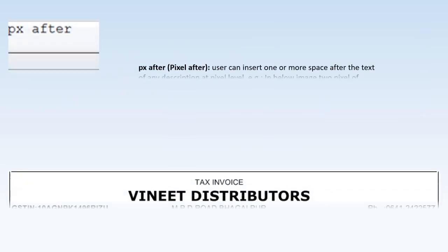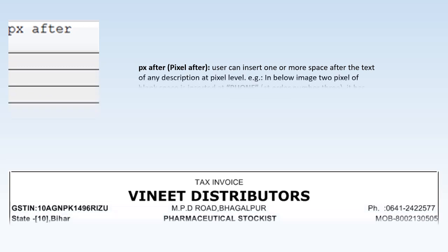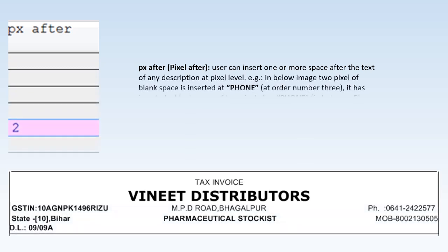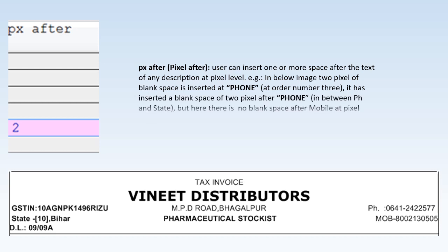Pixel Gap allows users to insert one or more spaces after the text of any description at the pixel level. For example, two pixels of blank space inserted at Phone (order number three) creates a two-pixel gap after Phone between Phone and State, while there is no pixel-level blank space after Mobile — no gap between Mobile and DL.